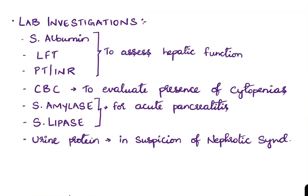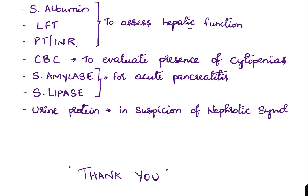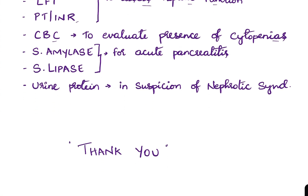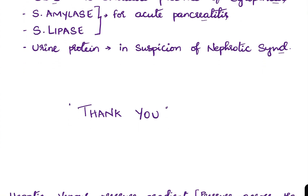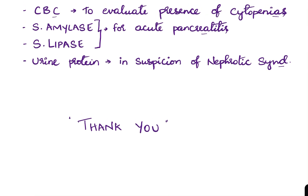Regarding lab investigations: serum albumin, liver function tests, and PT/INR are done to assess hepatic function. CBC (complete blood picture) is done to evaluate cytopenias. Serum amylase and lipase are checked for acute pancreatitis, and urine protein is assessed in suspicion of nephrotic syndrome. We will discuss ascites in detail in the coming video.